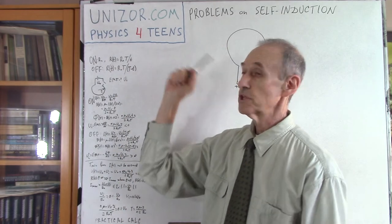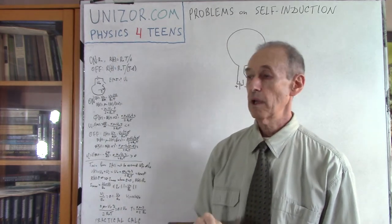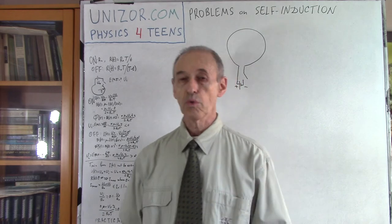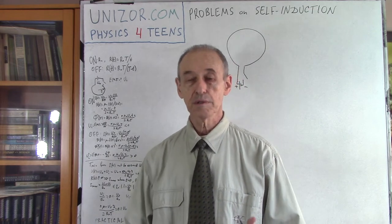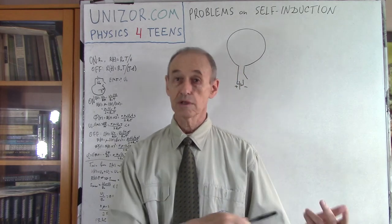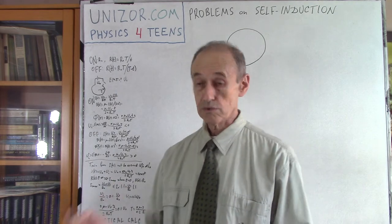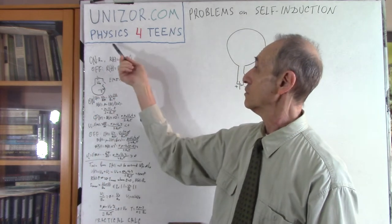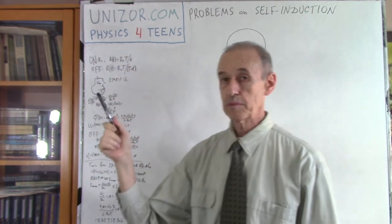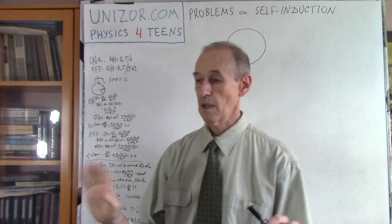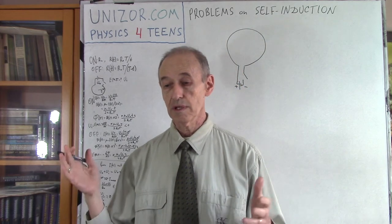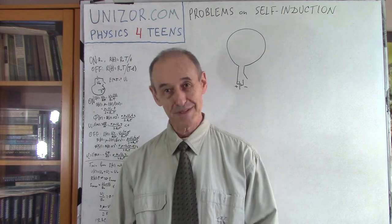This lecture is part of the Physics for Teens course presented on Unizor.com. I suggest you take a look at the website because the whole course is presented there and there are interdependencies between lectures. In this lecture I will be using something from the previous lecture. There is also a prerequisite course called Math for Teens on the same website. All courses are free — no strings attached.